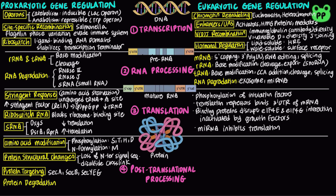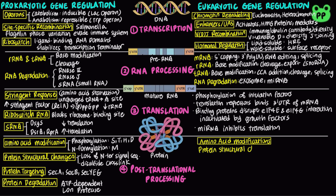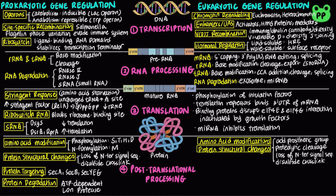Bacterial proteins are also degraded by ATP-dependent Lon protease. Eukaryotic polypeptides undergo more types of amino acid modifications, including lipidation, phosphorylation, iodination, ubiquitination, gamma-carboxylation, glycosylation, hydroxylation, acylation, methylation, and ADP-ribosylation. Eukaryotic protein structural changes include the addition of prosthetic cofactors, proteolytic cleavage, the loss of the N-terminal signal sequence, and the formation of disulfide cross-links.